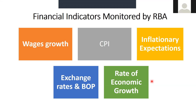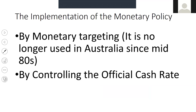Now, the implementation of monetary policy. Earlier, monetary policy used to be implemented by monetary targeting — that is, by changing the money supply in the financial markets. By changing the money supply, it could manipulate the cash rate and the interest rate. Changing the monetary base was the way of targeting monetary policy actions. However, this approach has not been used in Australia since the mid-1980s.